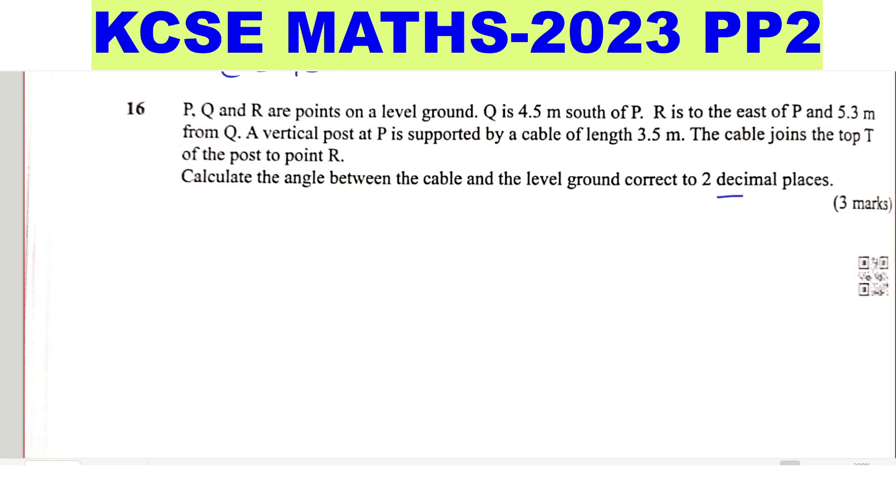So a sketch would be very important in this question because it will help us to solve it. Let me sketch these P, Q and R. We position these points. So Q is 4.5 meters south of P. So assuming that P is here, so P is here, then it means 4.5 meters. So this is the 4.5 meters and Q is south of P. So Q is somewhere here.